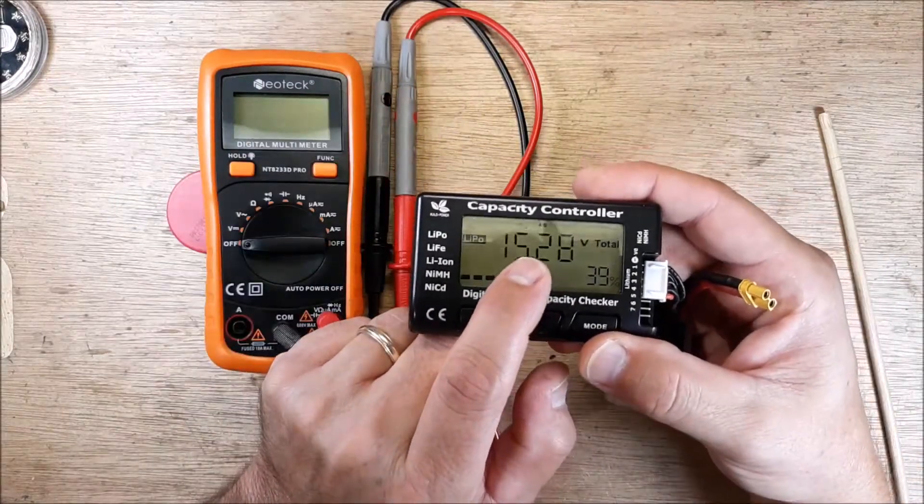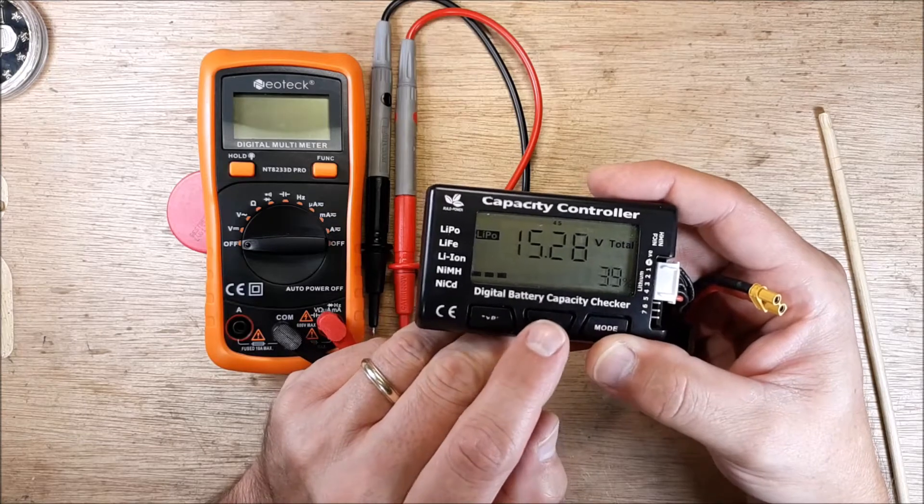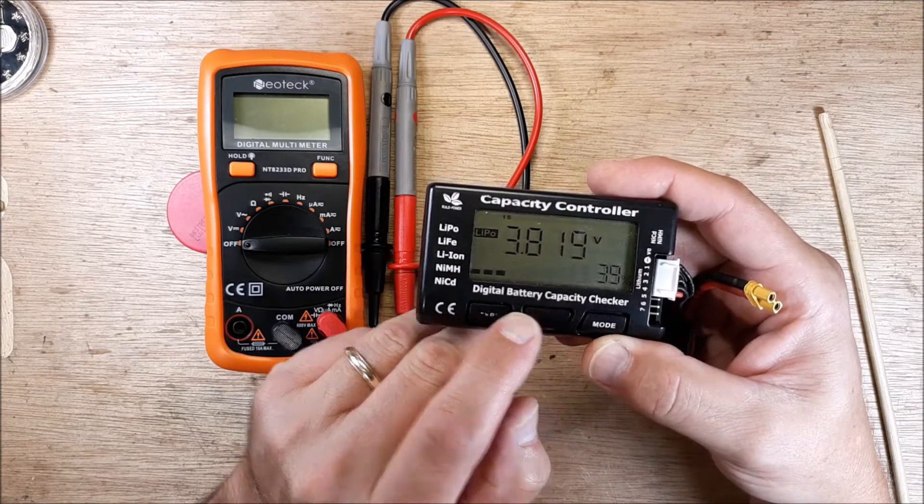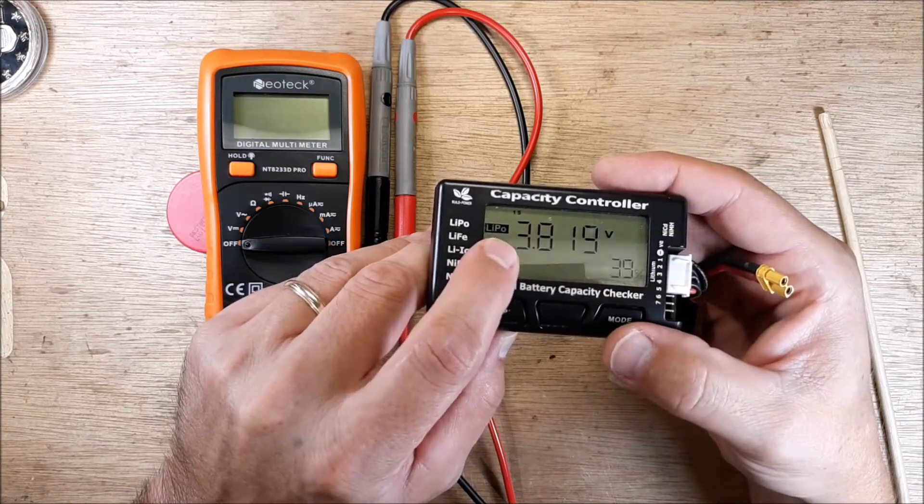It gives you your full voltage which is 15.28. If you hit the center button here it'll show you each cell. You see it's on LiPo. You can change modes and it'll switch from LiPo to Li-ion and all these different types.